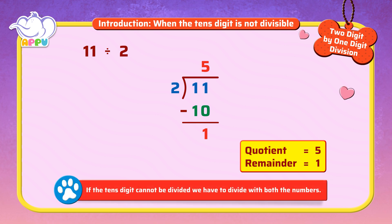If the tens digit cannot be divided, we have to divide with both the numbers.